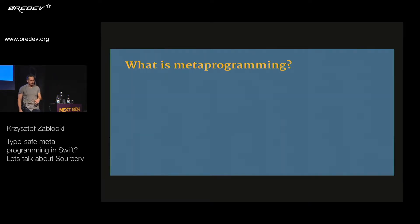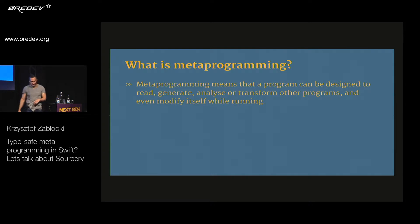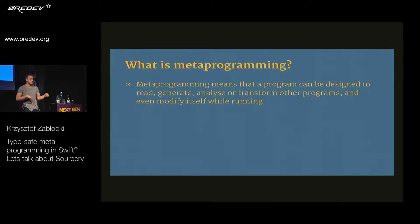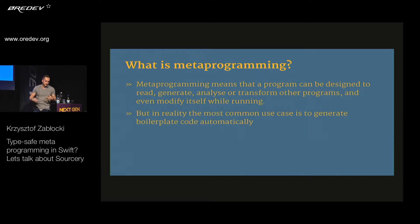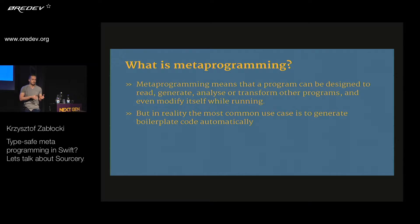Let's start with what exactly is metaprogramming. What's a better definition than what Wikipedia says? Wikipedia states that metaprogramming means a program can be designed to regenerate, analyze, or transform other programs and even modify itself while running. But that's not how most people use it. Usually we use it to generate boilerplate code automatically — to limit the repetitions we have to do, simply said.